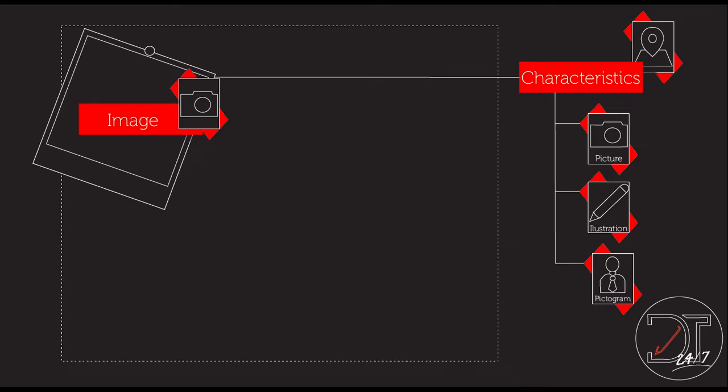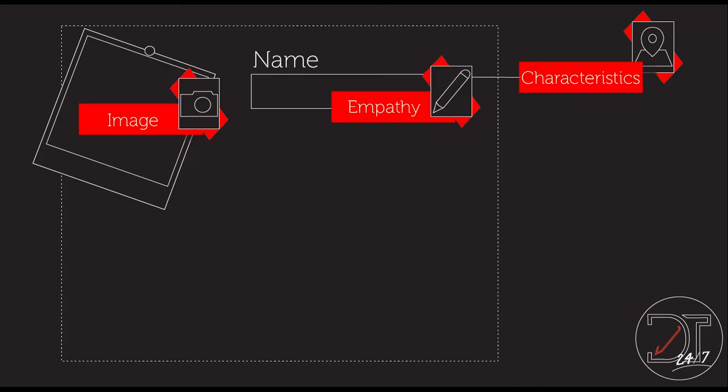When you know which person you are mapping and you already have their image, you put the full name. Some people use a nickname, so you can put that if you want, but it has to be real. The idea is that you understand you are designing for someone alive and you understand their needs.